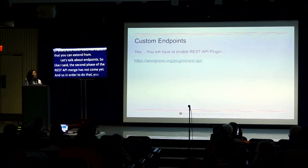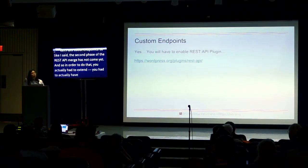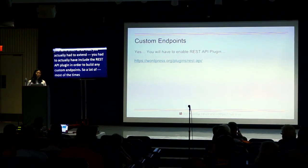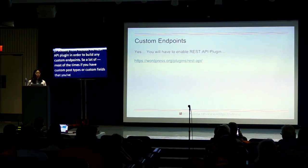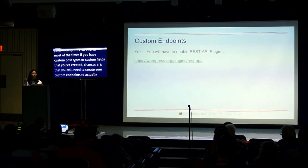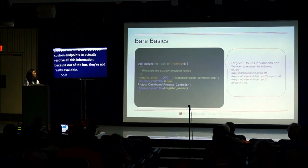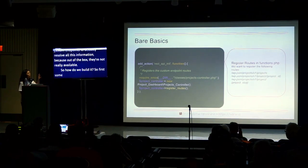Let's talk about endpoints. The second phase of the REST API in WordPress has not come yet. So in order to build any custom endpoints, you actually have to include the REST API plugin. Most of the time, if you have custom post types or custom fields that you created, you'll need to create custom endpoints to leverage all that information — because out of the box they're not really available.